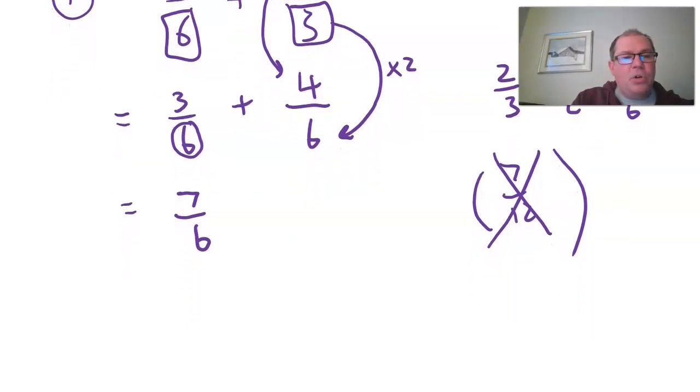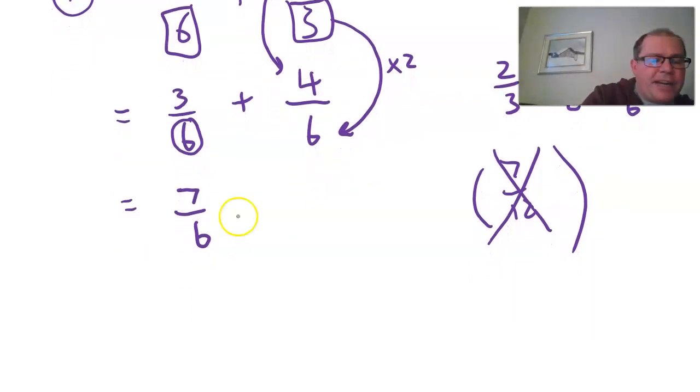Now that would be called a top heavy fraction or an improper fraction. And if you want, you can write that as a mixed number because six goes into seven once, remainder one, which still needs to be divided by the six.